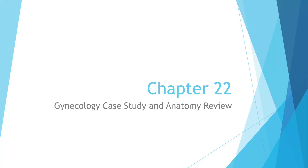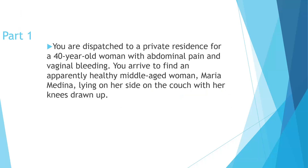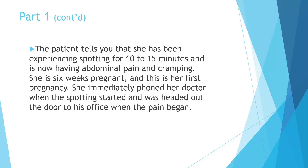Let's do chapter 22, the GYN case study and anatomy review. You're dispatched to a private residence for a 40-year-old woman with abdominal pain and vaginal bleeding. You arrive to find apparently healthy middle-aged woman Maria Medina laying on her side on the couch with her knees drawn up. She's been experiencing spotting for about 10 to 15 minutes and is now having abdominal pain and cramping. She is six weeks pregnant and this is her first pregnancy. She immediately phoned her doctor when the spotting started and was headed to his office when the pain began.